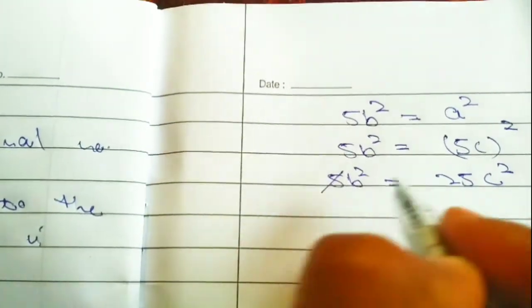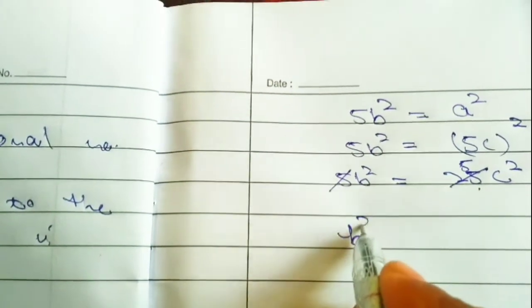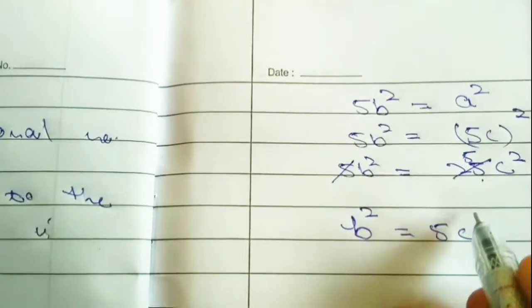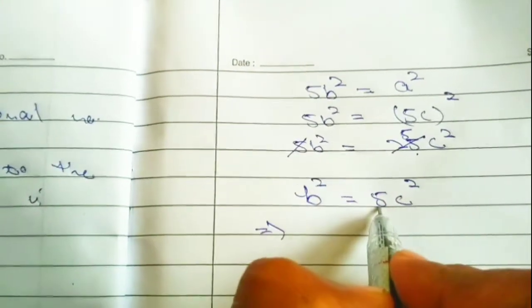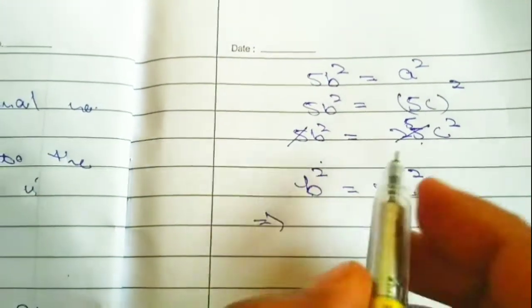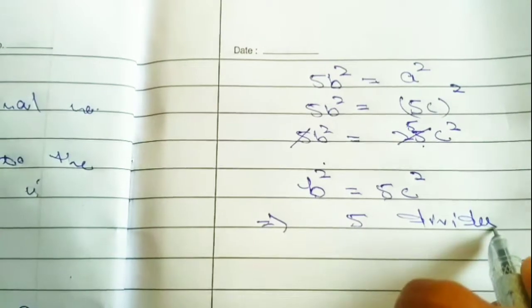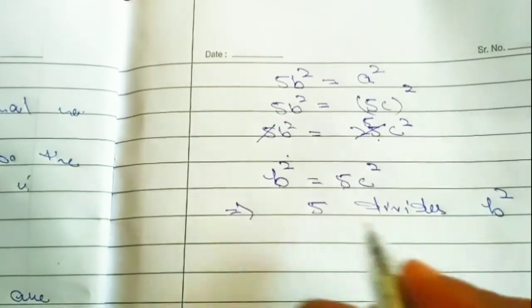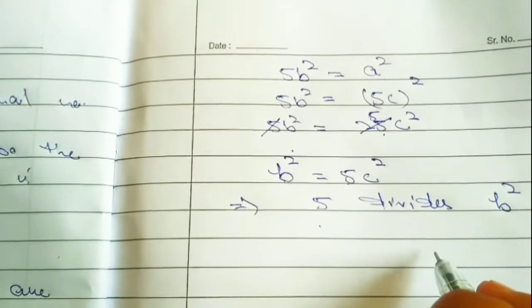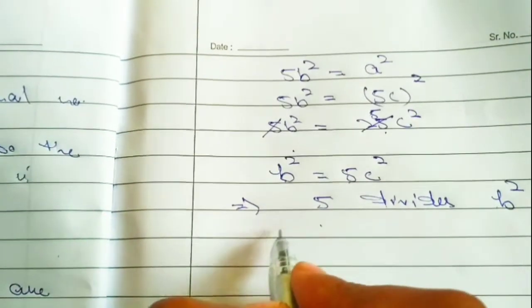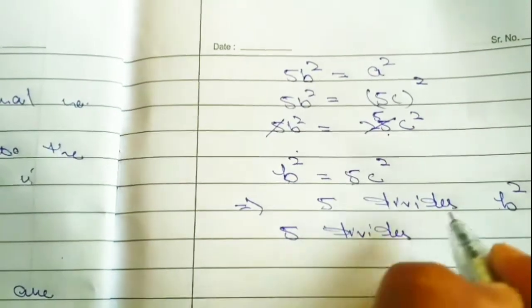5B square equal to 5 square, that is 25C square. Canceling one 5 from both sides, we will have B square equal to 5C square. It implies that 5 divides B square.